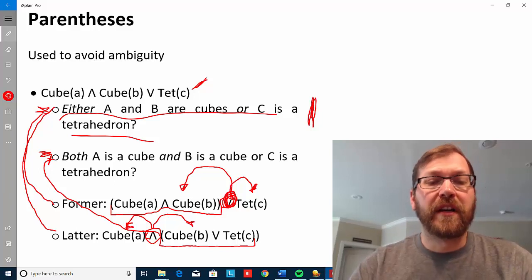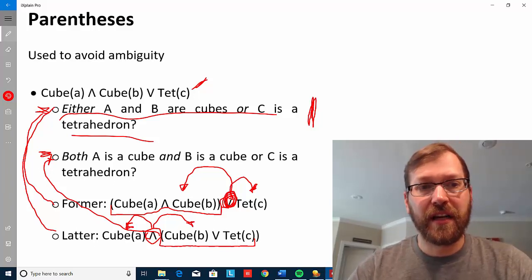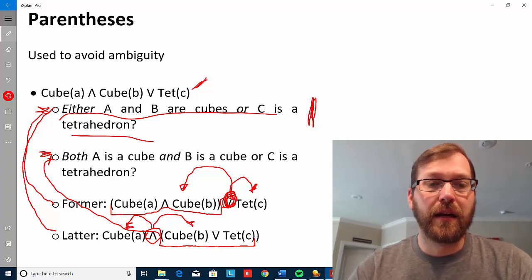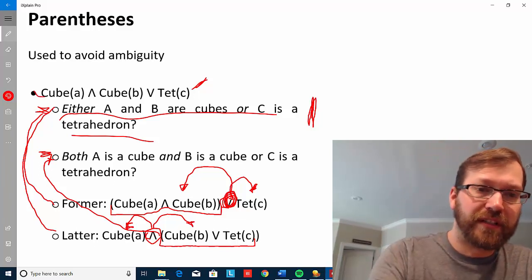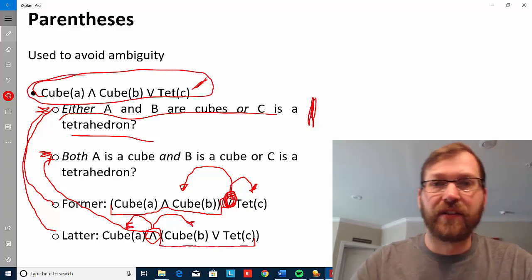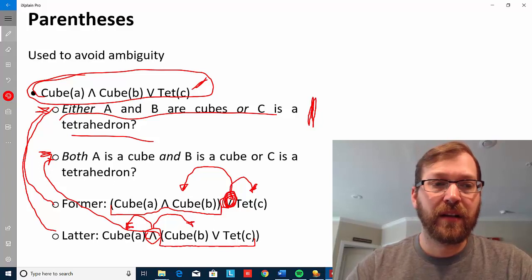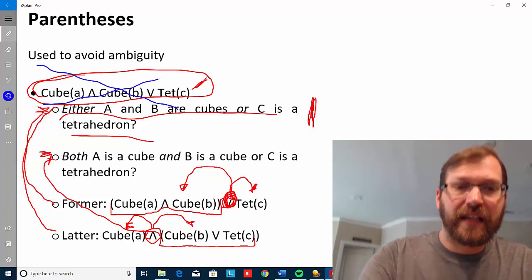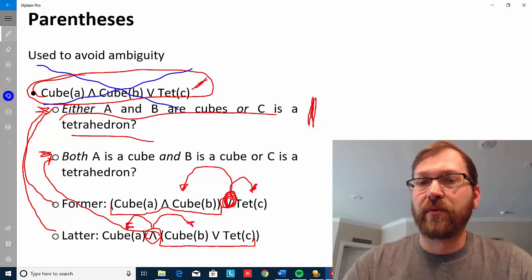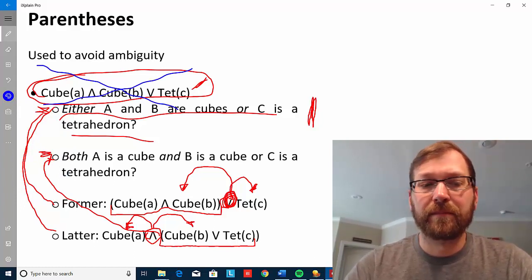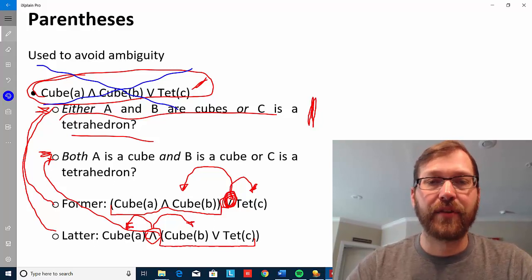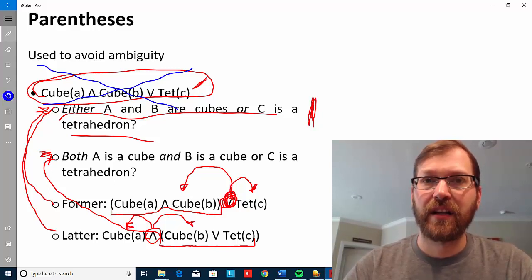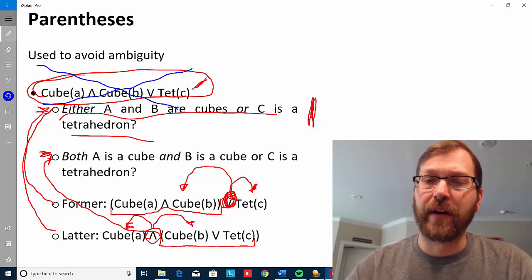So we can see how parentheses here allows us to disambiguate this original sentence and gives it only one meaning instead of two possible meanings. In fact, this would be grammatically incorrect. It would be gibberish in FOL. So we would have to use parentheses in this case in order for it to be grammatically correct in FOL.